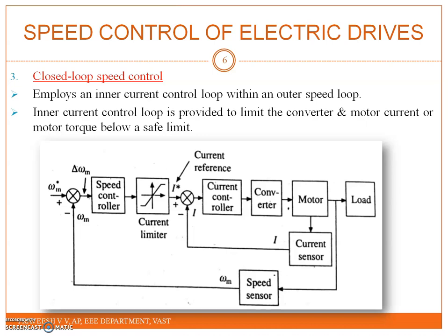An increase in reference speed omega_m* produces a positive speed error delta_omega. The speed error is processed through a speed controller and applied to a current limiter, which saturates even for a small positive speed error. Consequently, the limiter sets the current reference for the inner current control loop at the value corresponding to the maximum allowable current, and the drive accelerates at the maximum allowable current.